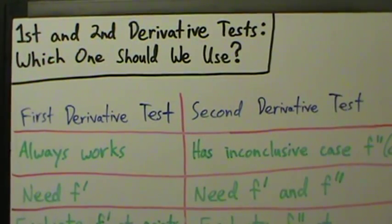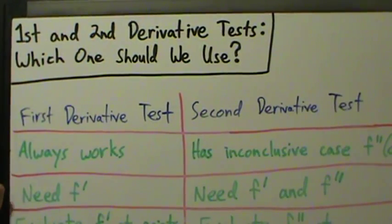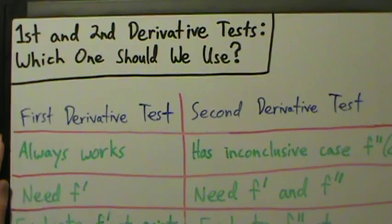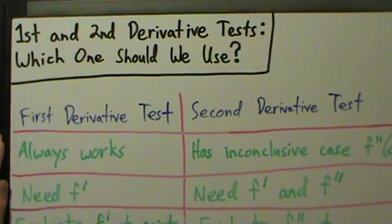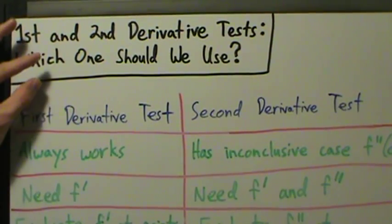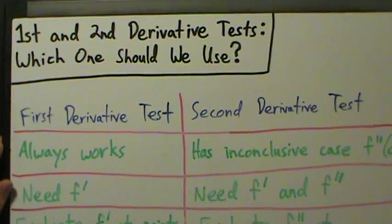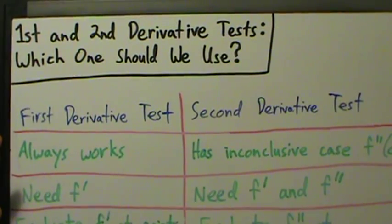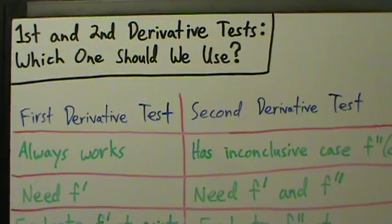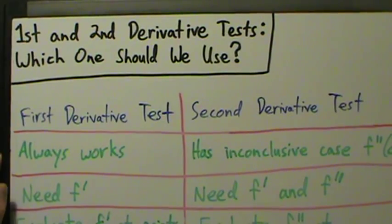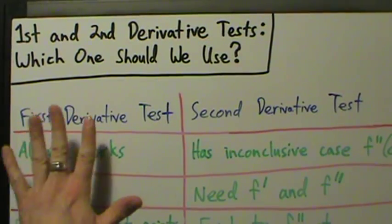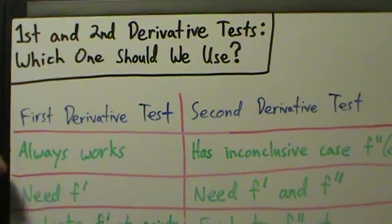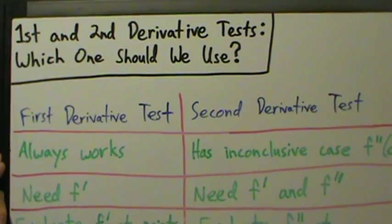We've done a few examples with the first and the second derivative tests. Now we should talk about which one we should use. Before we begin, if you're doing a quiz, test, or homework assignment, of course you want to do whatever the instructions say. If the instructions say use the first derivative test, go ahead and do that. If they say use the second derivative test, do that.